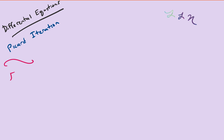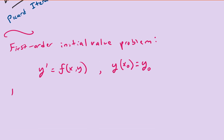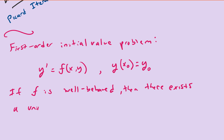Recall that the first order initial value problem is given by y prime equals f of x, y — that's your first order differential equation. If I give you a point y of x₀ equal to y₀, then this gives you a particular solution. The theorem says that if f is well behaved, then there exists a unique solution y.